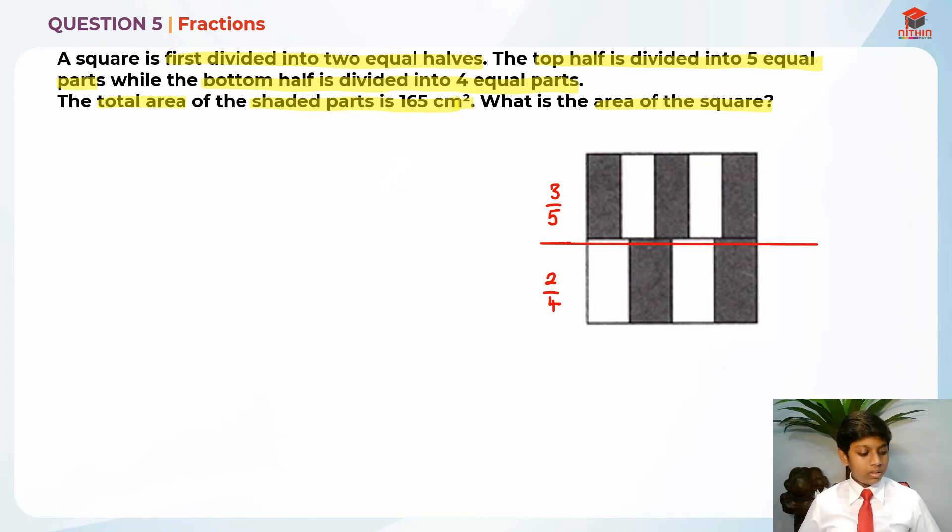So we know that these 2 areas are equal. The top half and the bottom half is equal. So basically, I'm going to make the denominators the same. So 3/5 is equal to 12/20 and 2/4 is equal to 10/20.